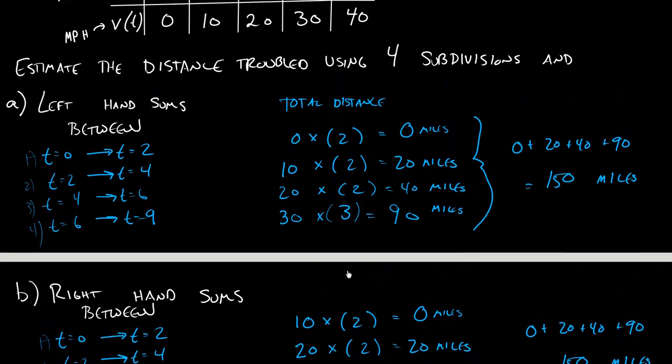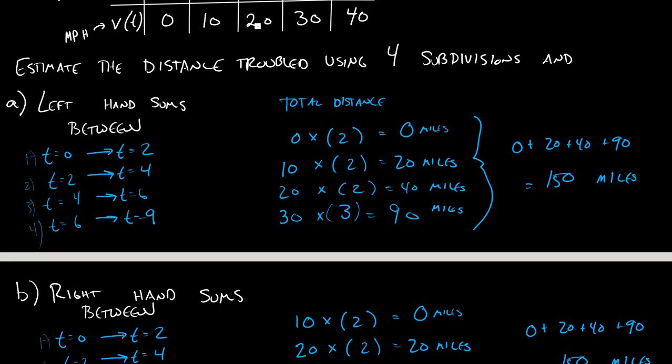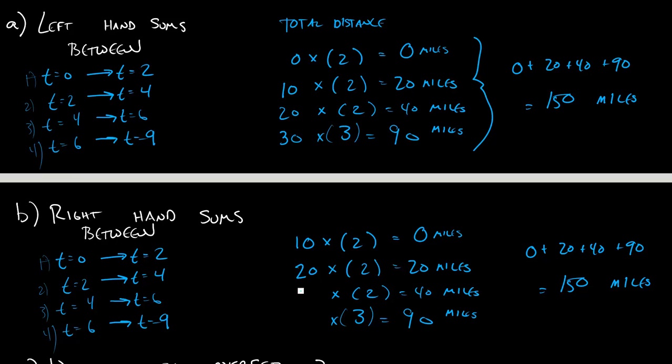So then we'll do 20. Just look at the table. The right hand side of that interval is 20. The right hand side of the next interval is 30, and the right hand side of the last interval is 40.